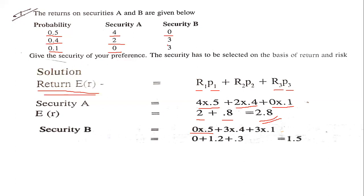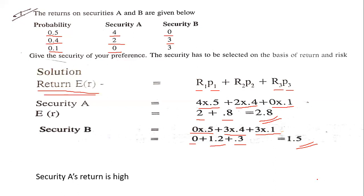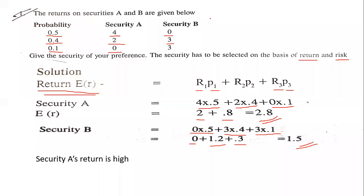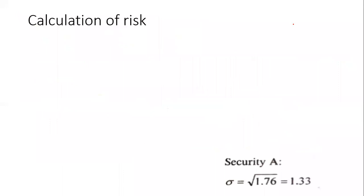Now calculating for Security B: return of 0 with probability 0.5 gives 0 × 0.5 = 0; return of 3 with probability 0.4 gives 3 × 0.4 = 1.2; return of 3 with probability 0.1 gives 3 × 0.1 = 0.3. So the expected return for Security B is 0 + 1.2 + 0.3 = 1.5. By comparison, Security A's return is higher at 2.8.